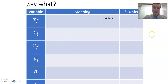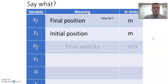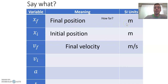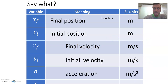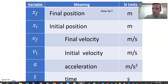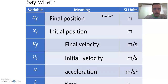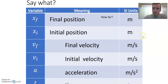We've already discussed things like X and V. The only thing new for this unit is A. We already know that X means position, measured in meters. XF would be final position, XI would be initial position. We've got velocity — VF and VI would be final and initial velocity in meters per second. Acceleration would be in meters per second squared, and time would be in seconds. Go ahead and write those down in your notes.